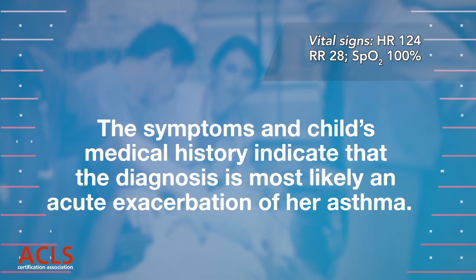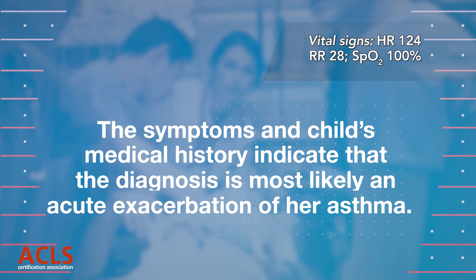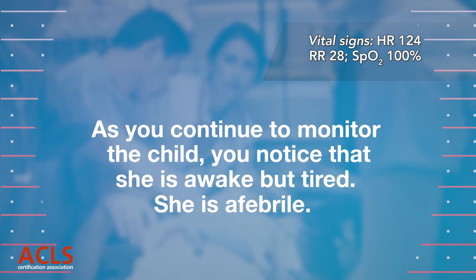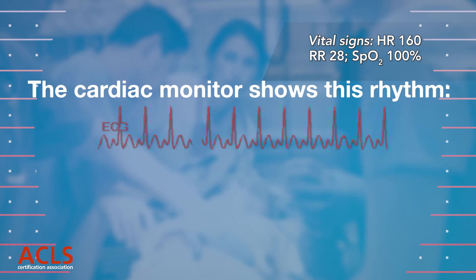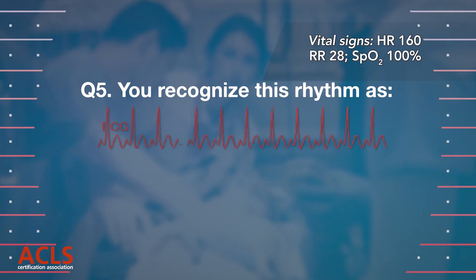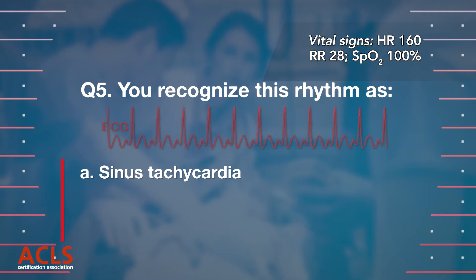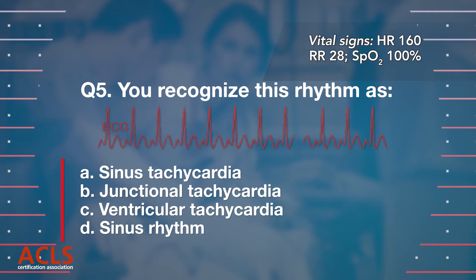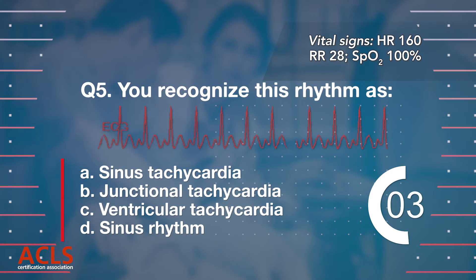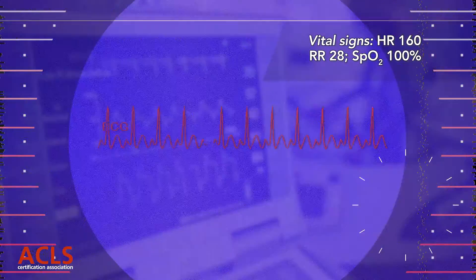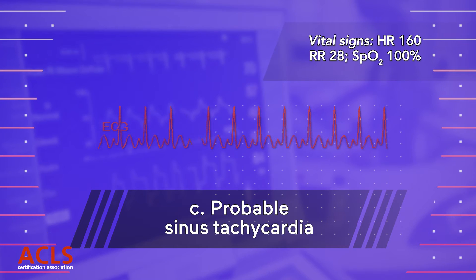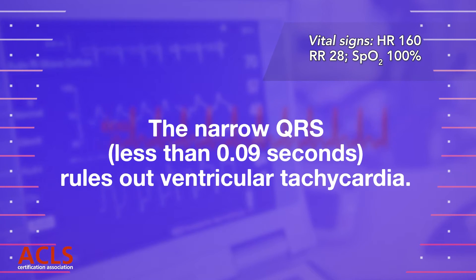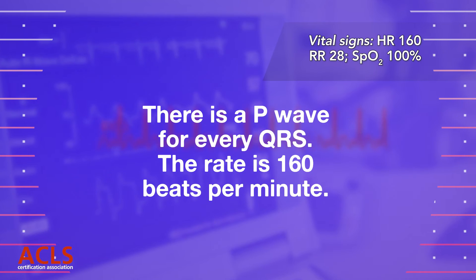As you continue to monitor the child, you notice she is awake but tired. She is afebrile. The cardiac monitor shows this rhythm. Question 5: You recognize this rhythm as: A) Sinus tachycardia; B) Junctional tachycardia; C) Ventricular tachycardia; D) Sinus rhythm. Correct answer A — Sinus tachycardia. The narrow QRS (less than 0.09 seconds) rules out ventricular tachycardia. There is a P wave for every QRS and the rate is 160 beats per minute.